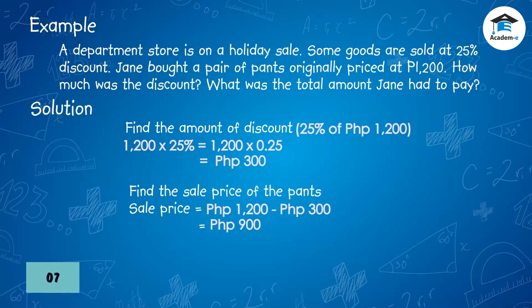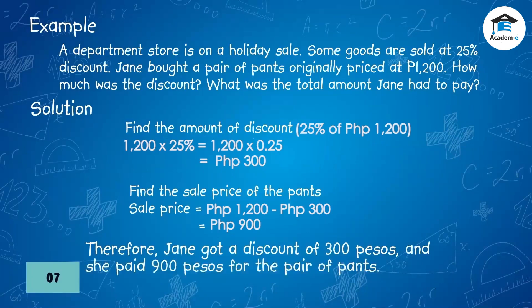The sale price of the pants: sale price = original price minus discount = 1,200 minus 300 = 900 pesos. Therefore, Jane got a discount of 300 pesos and she paid 900 pesos for the pair of pants.